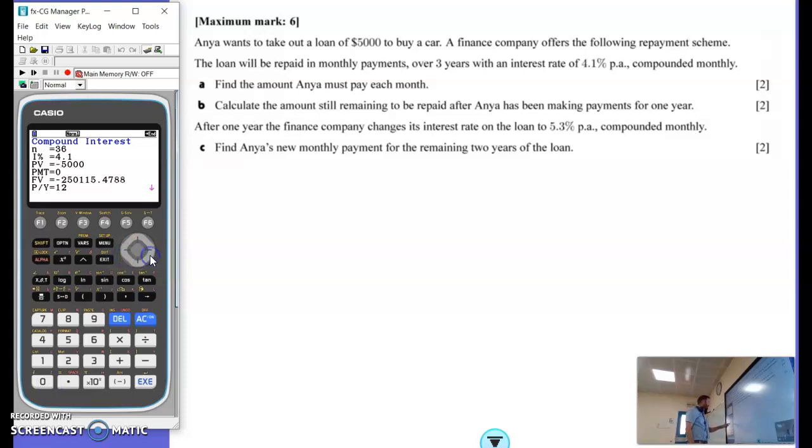Sorry. Because it's in her pocket, it's positive $5,000. And then the payment is what we're going to be looking for. The future value, we want it to be all paid off, all gone, and the payments per year, compounding periods per year, are both 12. So, we're going to find the payment. We click F5 for PMT, and there we see.